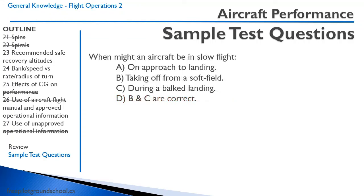When might an aircraft be in slow flight? Options include: on approach to landing, taking off from a soft field, and during a go-around. On approach to landing you should not actually be in slow flight — you should be at approach speed near best glide. However, on a soft-field takeoff you are nose-high, at high power, and slow. Same thing occurs during a go-around: you're in the flare at slow speed, apply full power, and end up at high power, nose-high, and slow. Answer: B and C (soft-field takeoff and go-around).